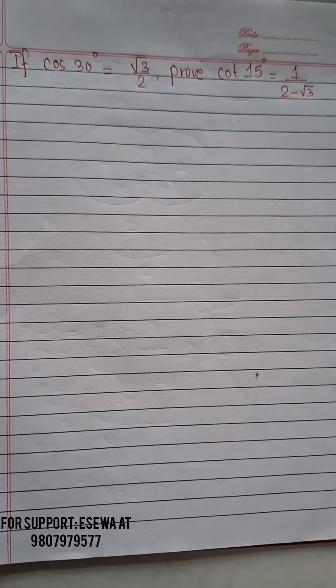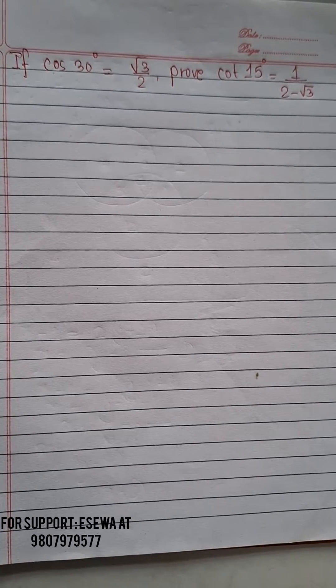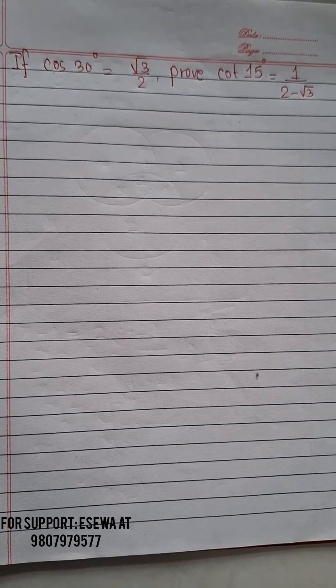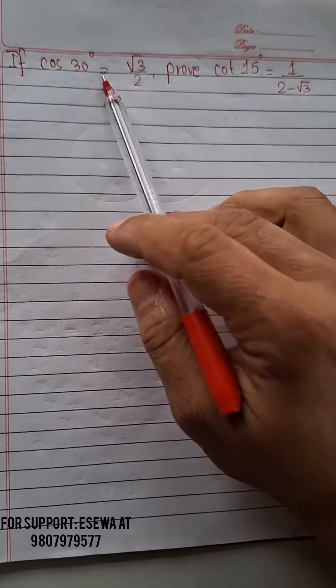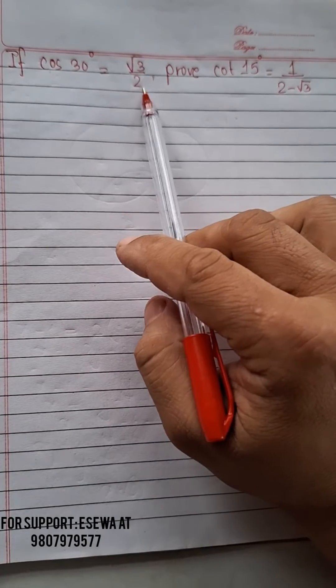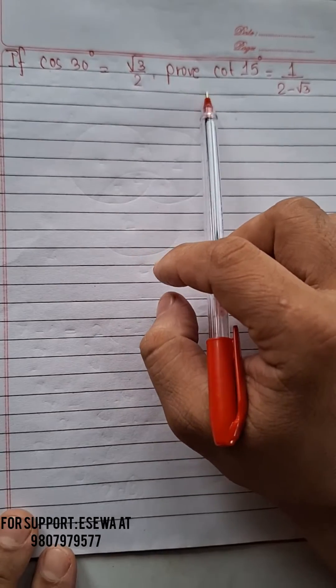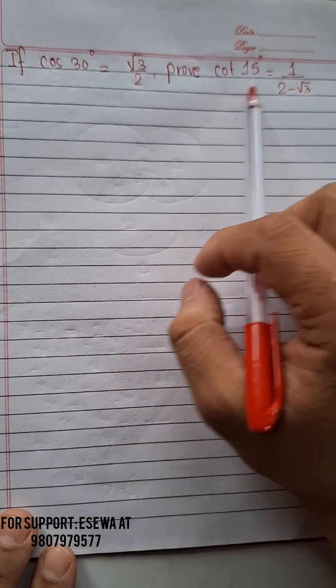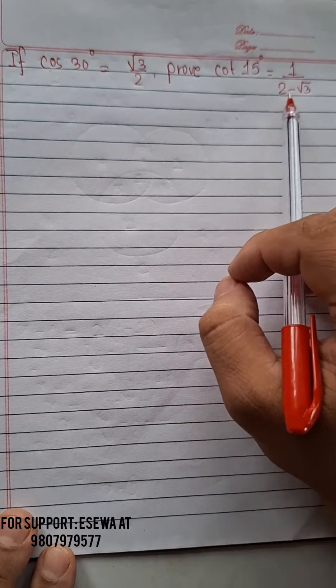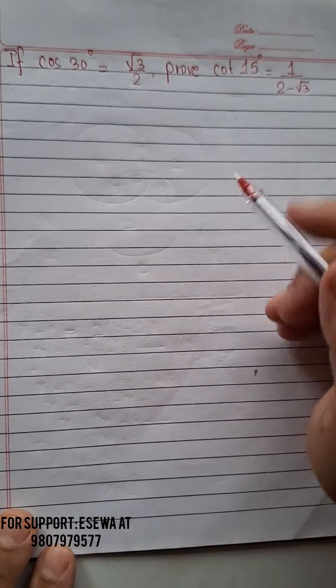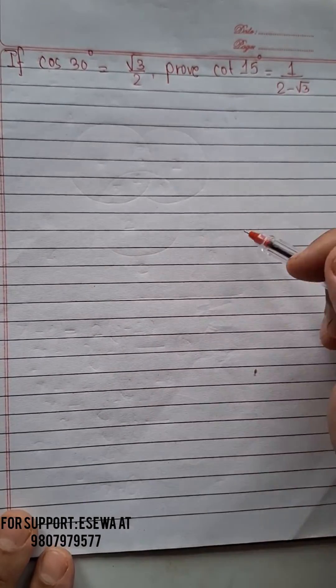Welcome everyone. We have been given that cos 30° = √3/2. In this condition, we have to prove that cot 15° = 2 - √3. That's quite simple to do with just a small use of a formula.